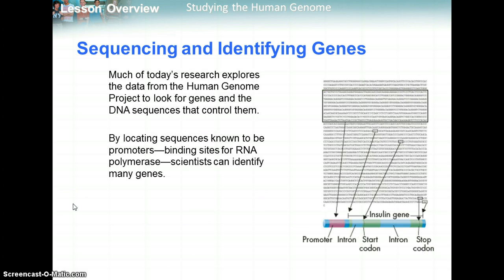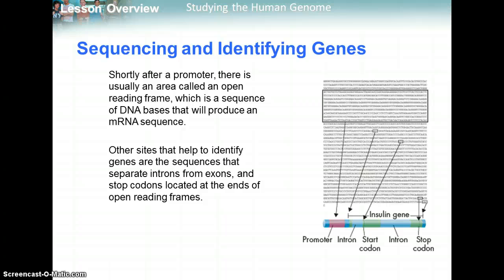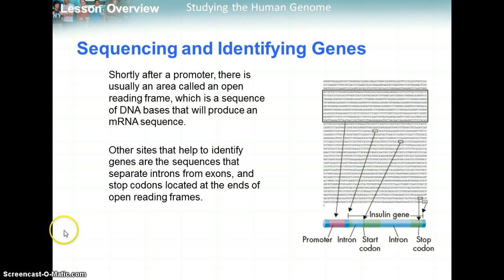Sequencing is useful for locating promoters — the binding sites where RNA polymerase acts — so researchers can identify many genes. For example, they identified the insulin gene, and now we can make insulin via bacteria to help diabetic patients. Shortly after promoters, there's usually an area called an open reading frame, which is a sequence of DNA bases that helps produce an mRNA sequence for a protein. Other sites that help identify genes are sequences that separate introns from exons, and stop codons located at the ends of the open reading frame. The whole idea is to identify genes for pharmaceutical purposes or to help find cures for different genetic disorders.